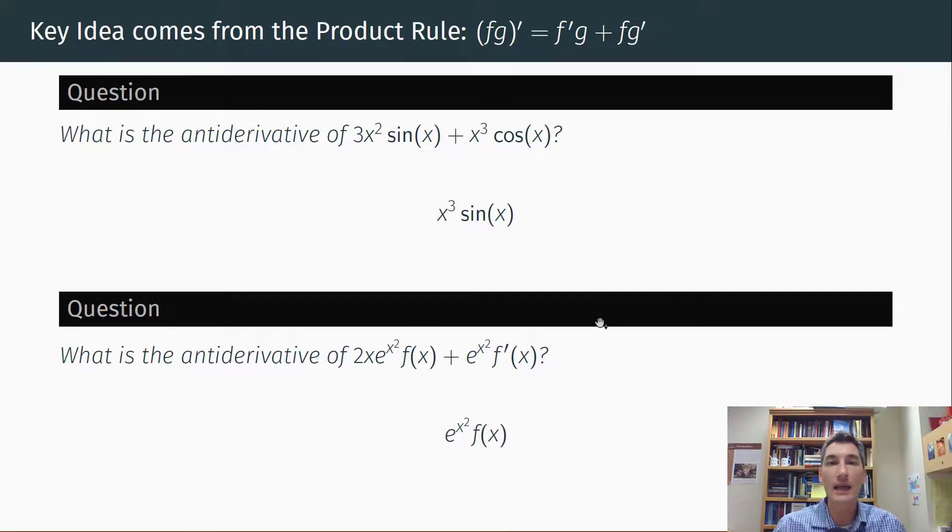So if we can understand the product rule and then look for things that look like product rules, and it will turn out when we solve linear differential equations, there's going to be things that show up that look like product rules, then the antiderivatives will be easy because it'll just be f times g. So if we can understand, if we can find the f' and the g and the f and the g', and we integrate it as a package, we'll just get fg. And that's what we're going to do.